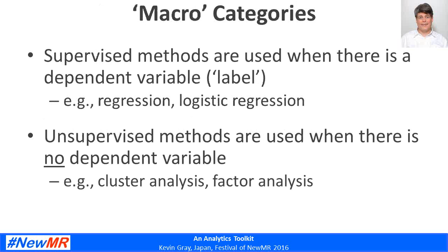A moment ago I showed you about 12 different ways to categorize analytics tools. You can actually collapse that in many cases into two: supervised methods and unsupervised methods. Supervised methods are used when there's a dependent variable, which is sometimes called a label — an example would be regression analysis or logistic regression analysis, where we're trying to predict something like purchase behavior from independent variables. Unsupervised methods are used when there is no dependent variable; two examples of that would be cluster analysis and factor analysis.